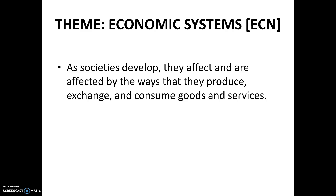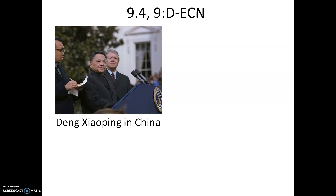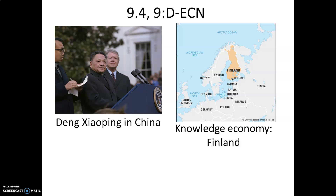Economic systems: the main topic is economics in the global age, topic 9.4. Deng Xiaoping in China exemplifies a government that encouraged free market policies. He allowed economic modernization in China — engaging in central planning while encouraging outside firms to build in China, like in Hong Kong. His visit to the US in 1979 solidified this attitude. Revolutions in information and communications technology led to the growth of knowledge economies.